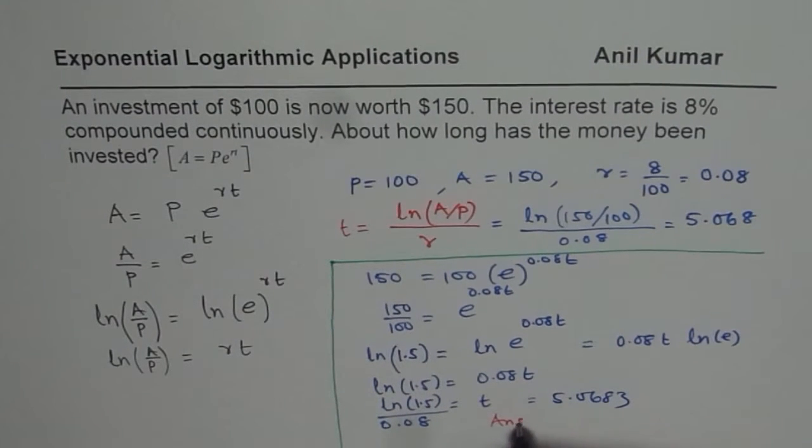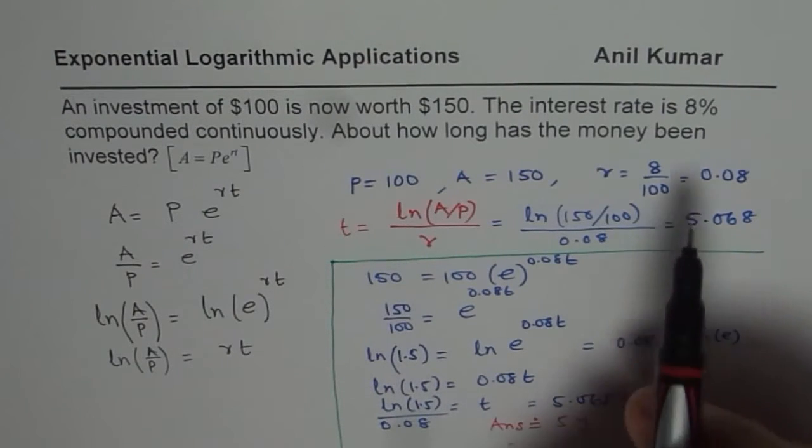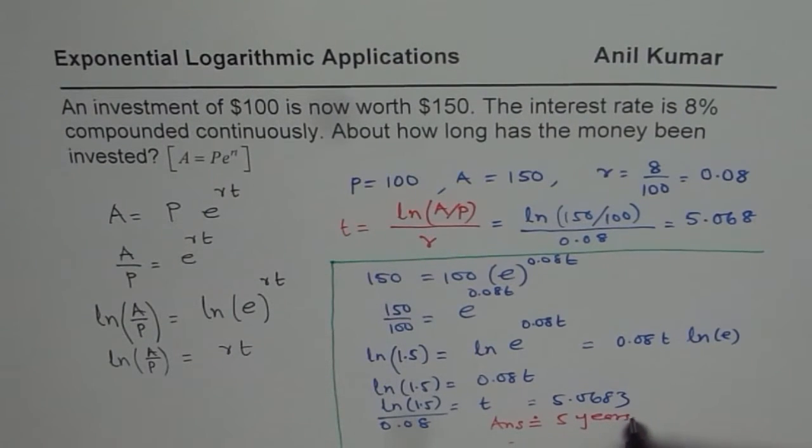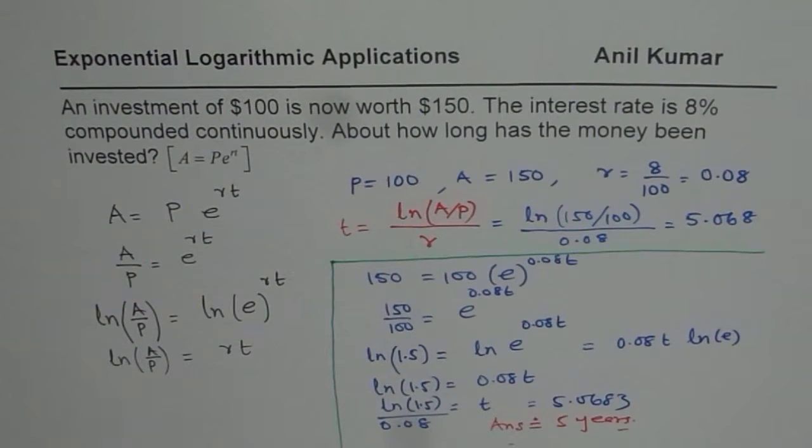So we can say answer is approximately 5 years. So 5 years, approximately, 5.06. So I hope you understand now that whenever the equation is to the base E, then we should take log to the base E, which is natural log ln. And that helps to solve. Thank you, and all the best.